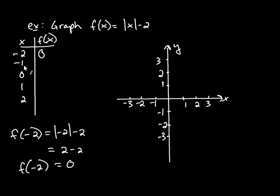And now what if x is negative 1? Let's do that one in our head here. The absolute value of negative 1 is 1, and 1 take away 2 is negative 1. If I plug in 0, I'm going to get negative 2. If I plug in 1, I'm going to get negative 1 again. And if I plug in 2, I'm going to get 0 again. So let's plot these ordered pairs. I have five of them.